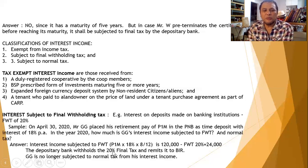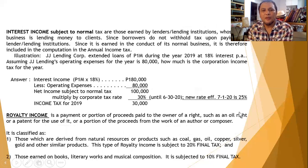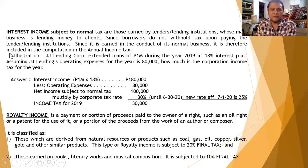The depository bank withholds the 20% final tax and remits it to the BIR. Therefore, Gigi is no longer subject to normal tax on his interest income because it has already been paid by the final withholding tax remitted by PNB. Interest income subject to normal tax covers those earned by lenders or lending institutions whose main business is lending money to clients. Since borrowers do not withhold tax upon paying the lender, and it is earned in the conduct of normal business, it is included in the annual income tax return.